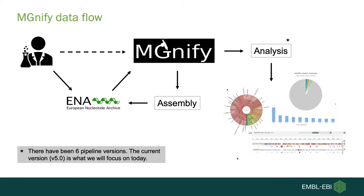There have been six different analysis pipelines so far and the most current one is version 5. We know these pipelines well — we're aware of the database versions and tool versions used in each. Having this pipeline aspect allows you to compare analyses across studies for one pipeline version.